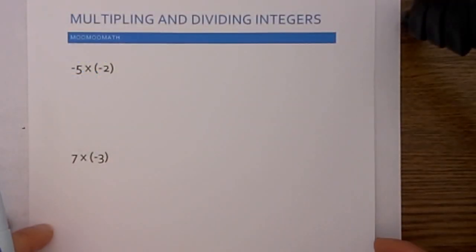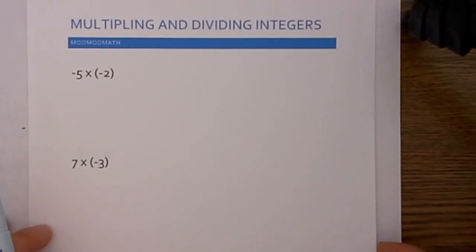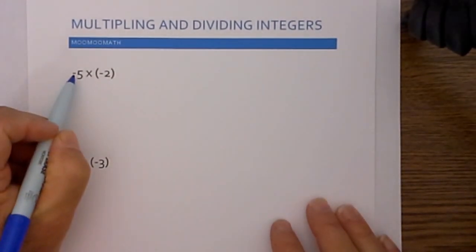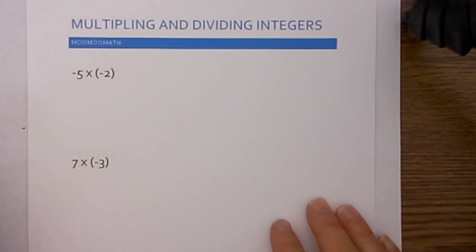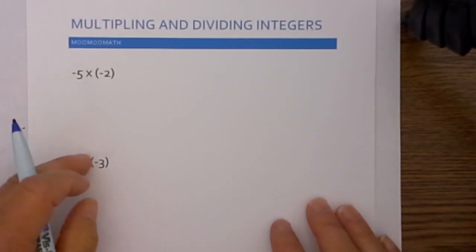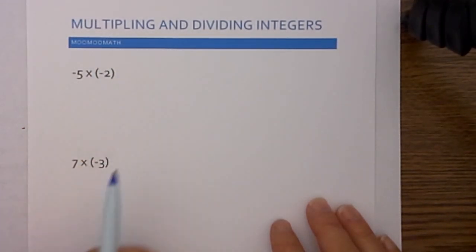Welcome to Moo Moo Math. In this video I'd like to talk about multiplying and dividing integers. Now, sometimes when you get multiplying a negative and negative number or a positive and negative number, you get confused on what the answer should be. So there are two rules to follow and I had both of these rules in the intro.